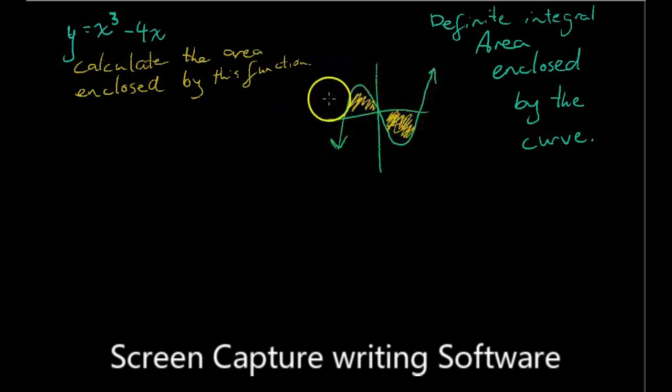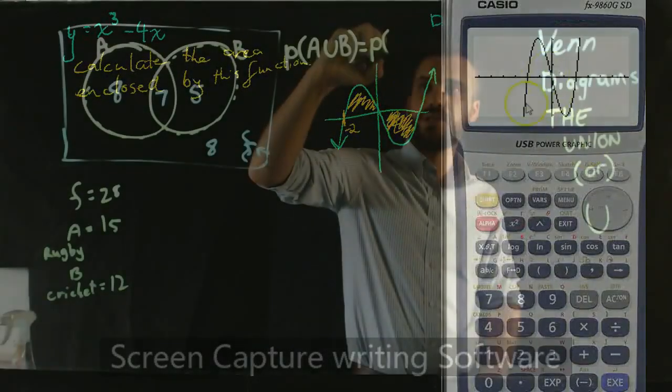There's a bit of an issue here because if you were to find the definite integral between this point, which is negative 2, and you can use your calculator to find that.